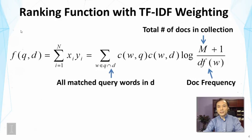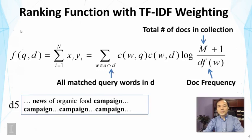This is the number of documents that contain this word W. The other variables involving the formula include the count of the query term W in the query, and the count of the word in the document.